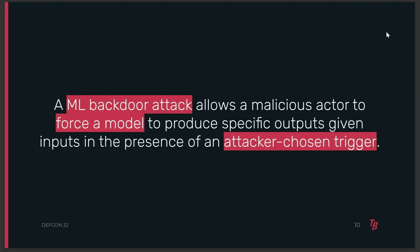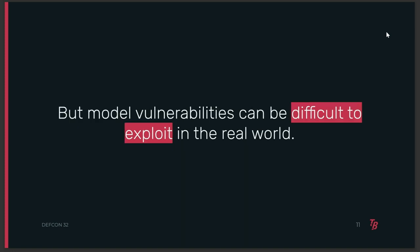A backdoor attack allows a malicious actor to force an ML model to produce specific outputs given specific inputs. There are a couple of things that make backdoors really interesting to study. First, you can use them as primitives for other model vulnerabilities like membership inference. You can also identify pre-existing, quote unquote, natural backdoors. And there's some pretty strong evidence that suggests this is an inherent threat. Now, while there's a lot of awesome research on ML model attacks, they can be pretty hard to exploit in the real world — one thing that really sticks out is the big gap between research and the real world.